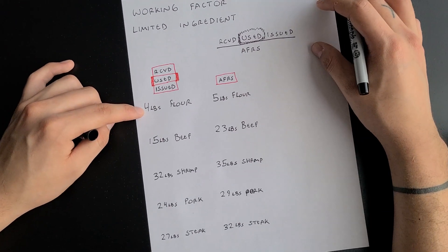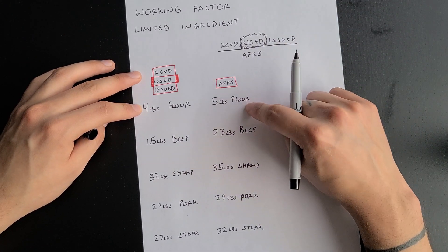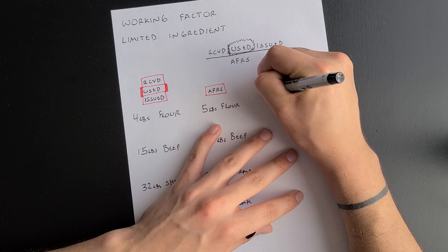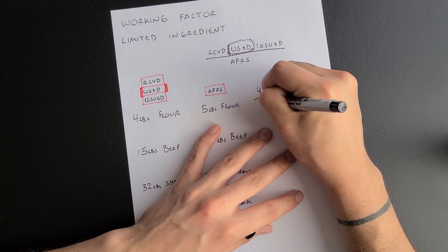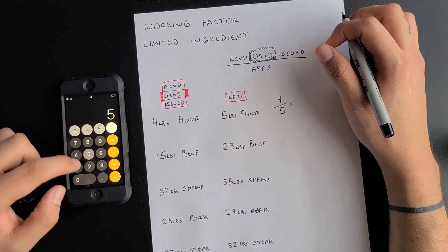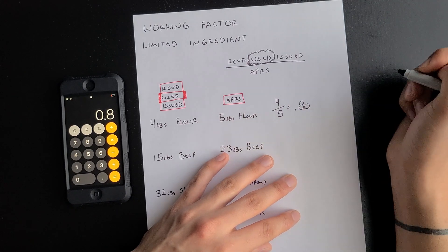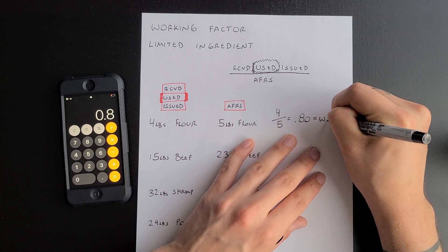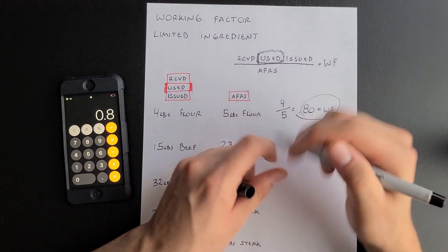So this first problem: you used four pounds of flour, but your recipe calls for five pounds of flour. All you're going to do is divide the used by your AFRS — what the recipe calls for. So it's four divided by five, which equals 0.80. That is your working factor. It's that simple.